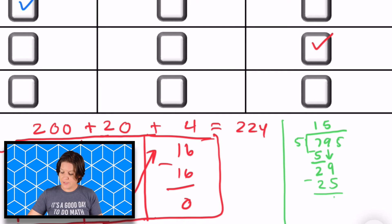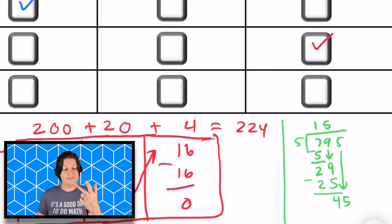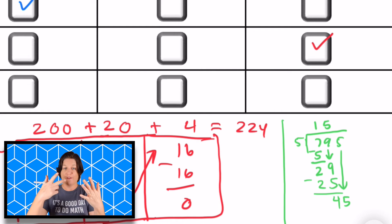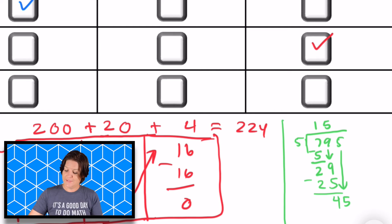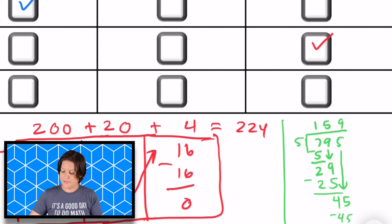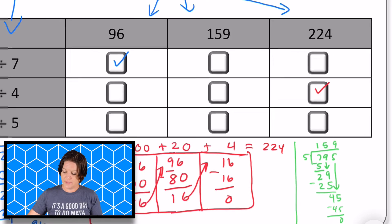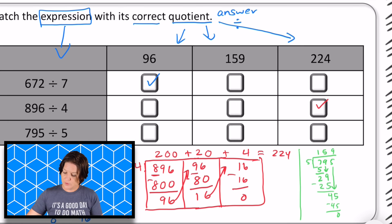Bring down the five. Five goes into 45 — counting up: 5, 10, 15, 20, 25, 30, 35, 40, 45 — nine times, which would be 45. Subtract and we get zero. So our quotient is 159, which is that middle one.